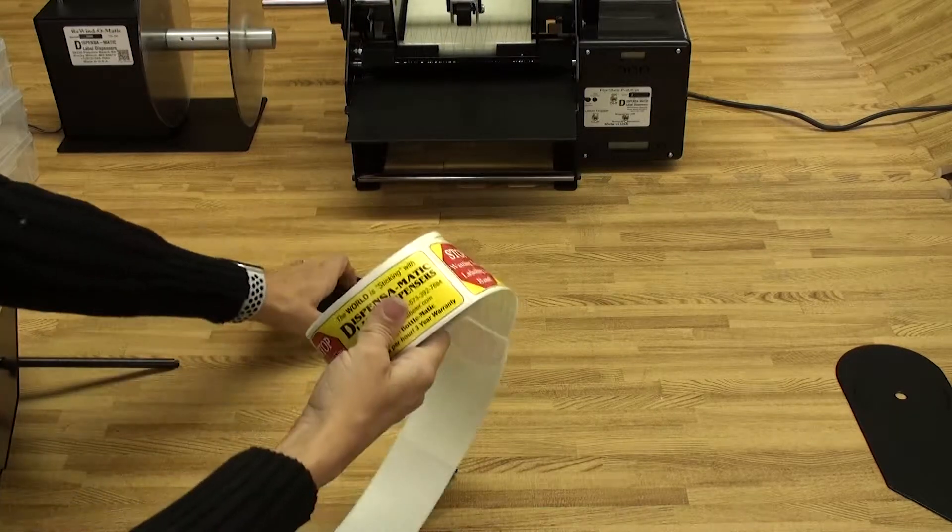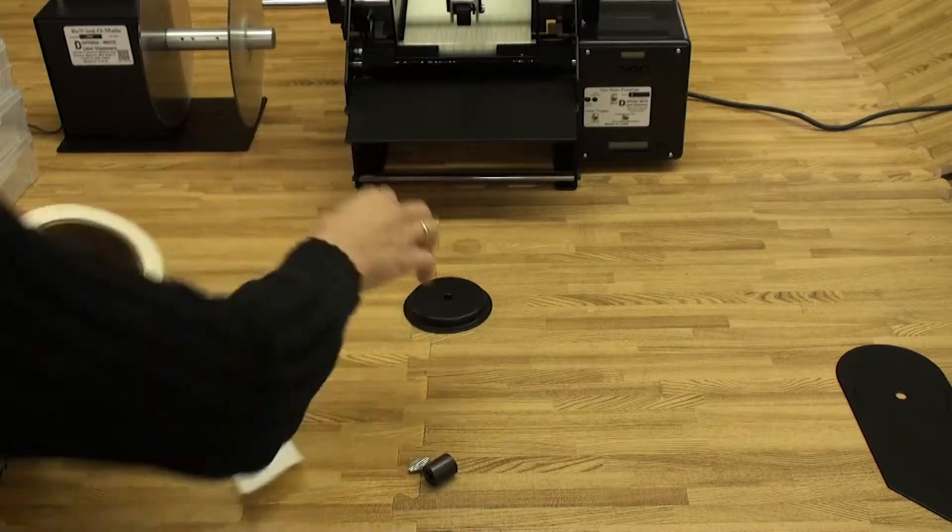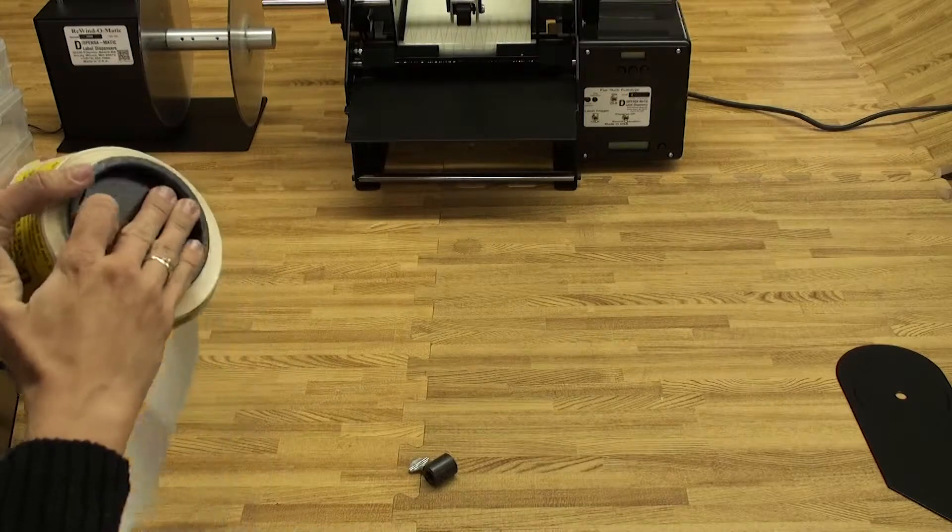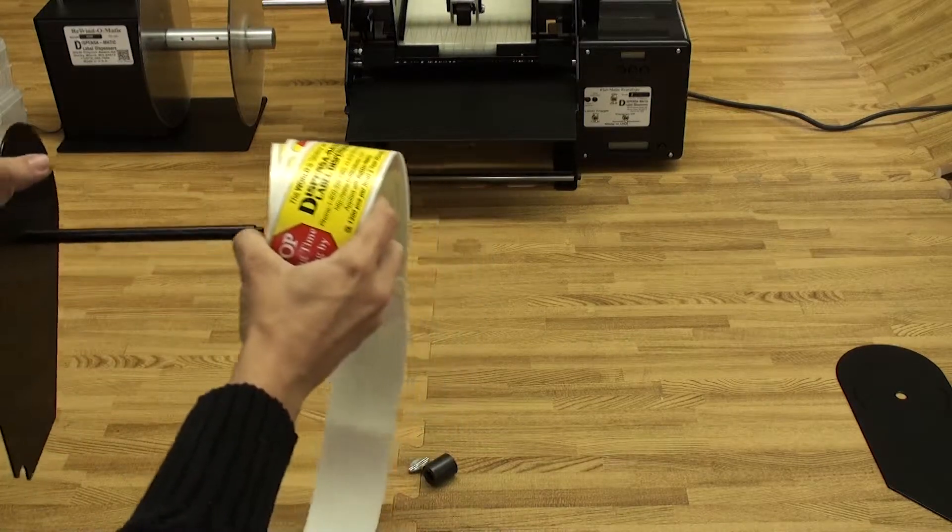Now we're going to put the core inserts onto the roll of labels. Then slide the roll of labels onto the roll holder rod.